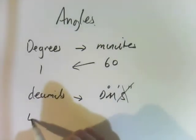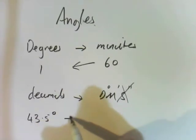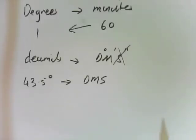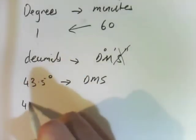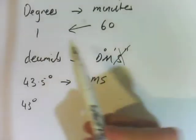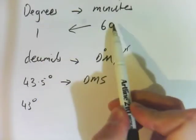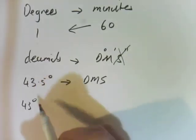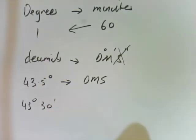But the first question, for example, is saying convert 43.5 degrees, which is a decimal, into degrees minutes seconds. Now this is quite easy. You can do this without the calculator. I'll show you in a minute how to do it with the calculator. But it's 43 degrees, and if there are 60 minutes in one degree and you've got half of a degree, then you've actually got 30 minutes. So I'll show you how to do that on the calculator.